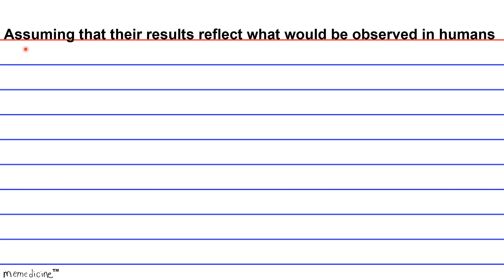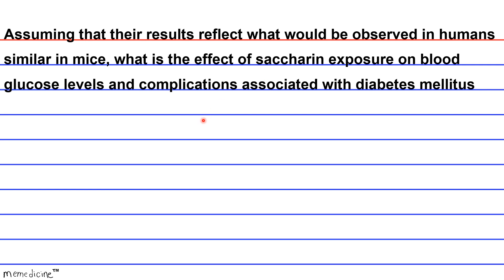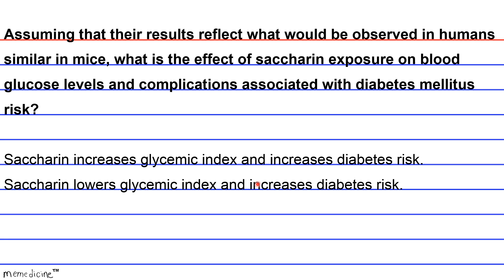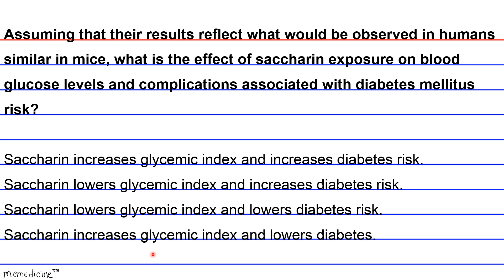Assuming that results in mice reflect what would be observed in humans, what is the effect of saccharin exposure on blood glucose levels and diabetes mellitus risk? Is it A: saccharin increases glycemic index and increases diabetes risk, B: saccharin lowers glycemic index and lowers diabetes risk, C: saccharin lowers glycemic index and lowers diabetes risk, or D: saccharin increases glycemic index and moderates diabetes?